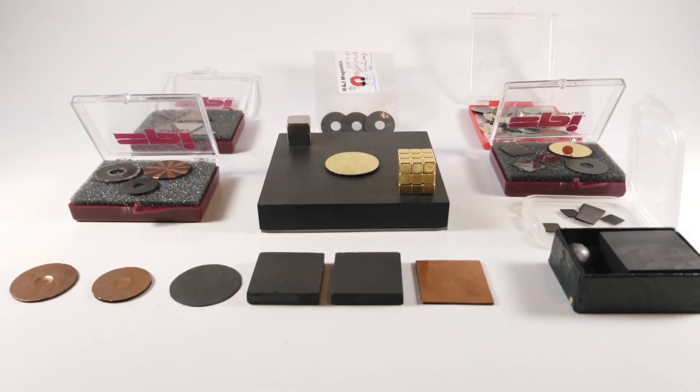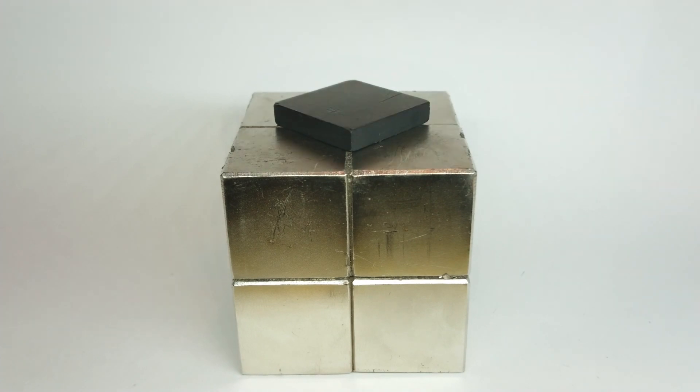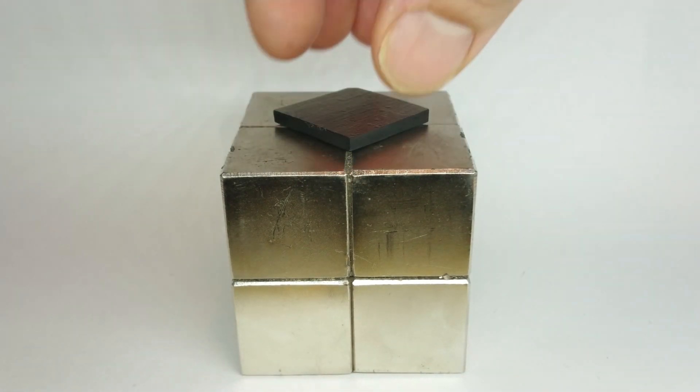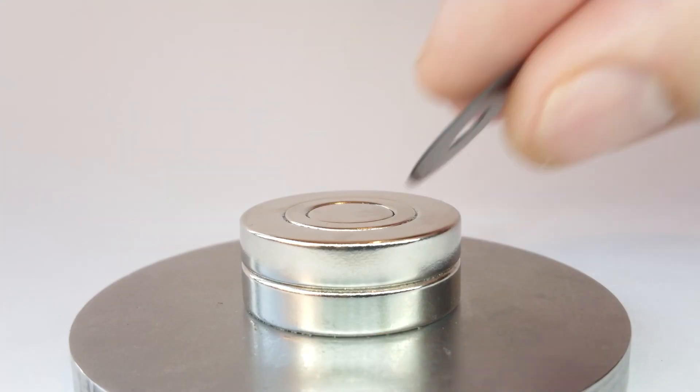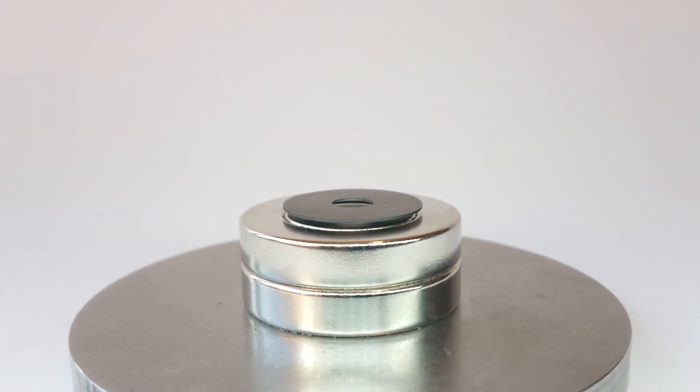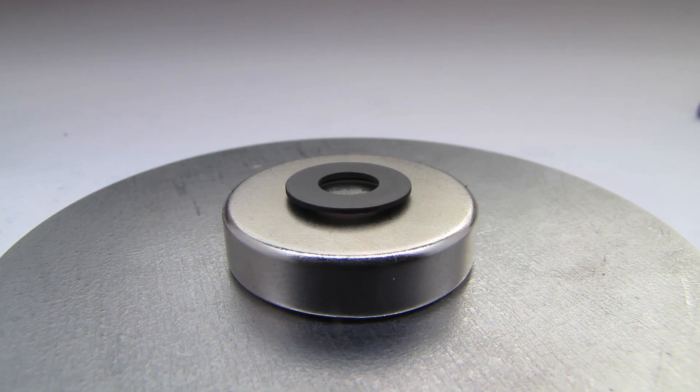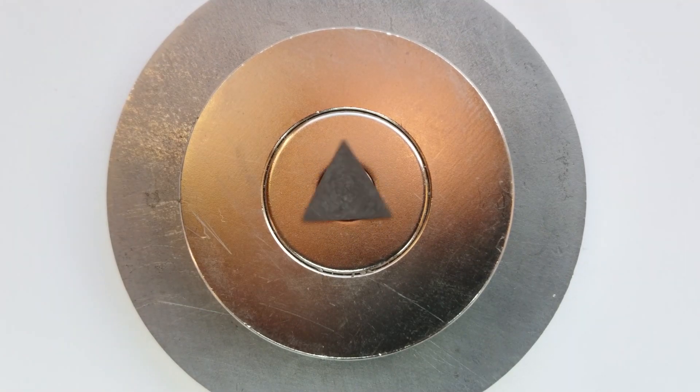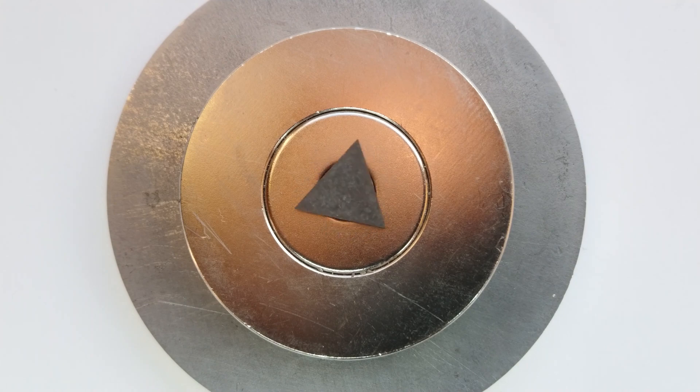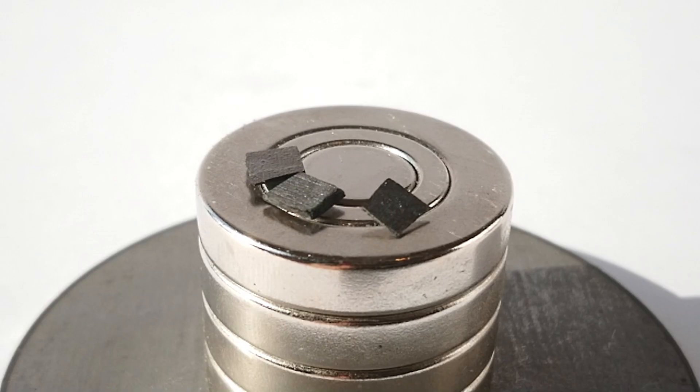A thin piece of pyrolytic graphite will levitate on its own over a magnetic array. Most of the lift comes from the edges where north and south poles make contact. The diamagnetic repulsion is able to overpower the weight of PG, and the flux density keeps it from falling if the piece is of right size in relation to the magnetic array.